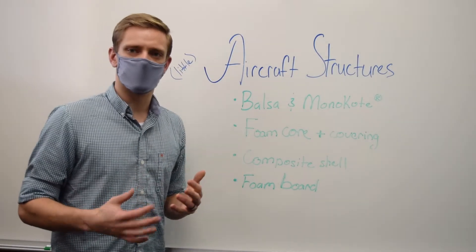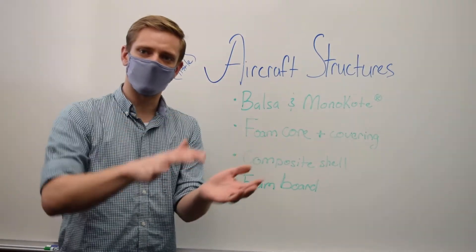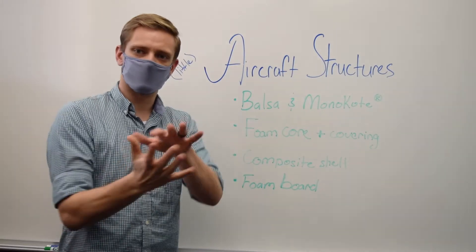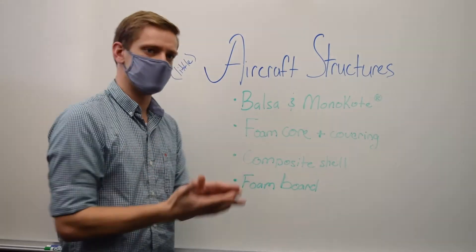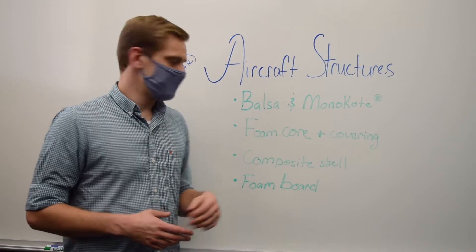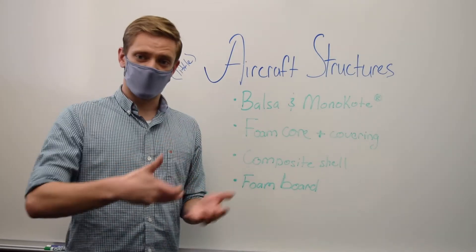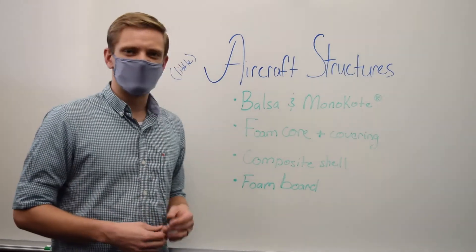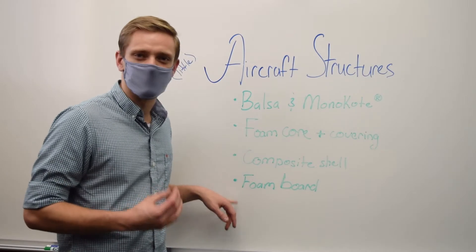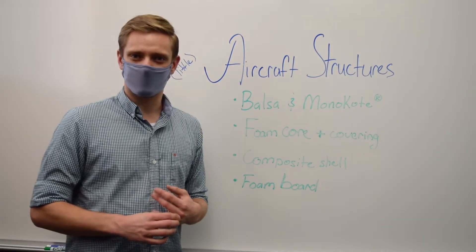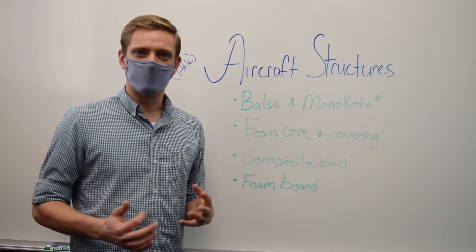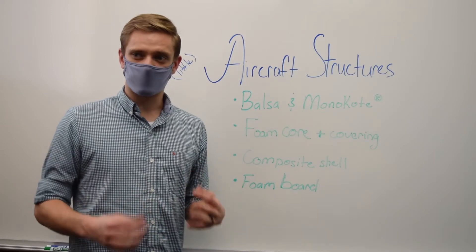Monoco is a thermoplastic sheet that you cover it with and then iron down so that it conforms to the shape. Then there's foam core with some sort of covering, a composite shell, and additionally a foam board type of material. These are used for model aircraft typically in the hobbyist realm, but they're not very structurally sound.